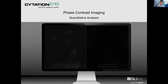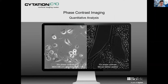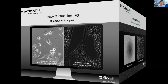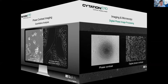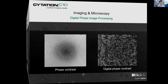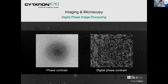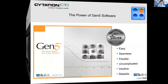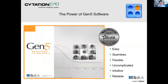Phase contrast objectives are available, shown here with 10x and 20x on two different tissue samples. If you don't want to opt for phase objectives, you can see traditional phase on the left, but through Gen5 you can also opt for a digital phase contrast application applied post-acquisition — all driven through the Gen5 software, making it a seamless and flexible process.